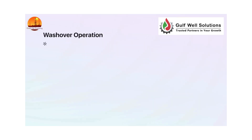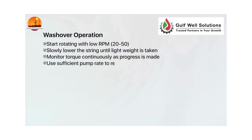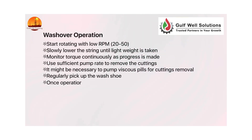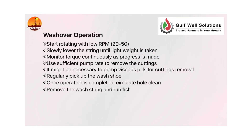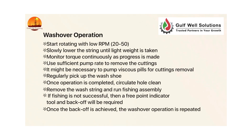Washover operation: start rotating with low RPM — 20 to 50. Slowly lower the string until light weight is taken. Monitor torque continuously as progress is made. Use sufficient pump rate to remove the cuttings; it might be necessary to pump viscous pills for cuttings removal. Regularly pick up the wash shoe. Once the operation is completed, circulate the hole clean, remove the wash string, and run the fishing assembly. If fishing is not successful, then a free point indicator tool and backoff will be required. Once the backoff is achieved, the washover operation is repeated.